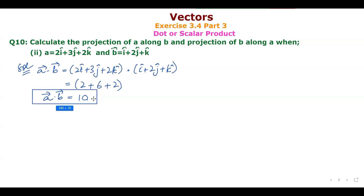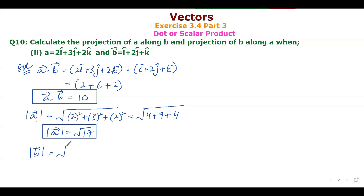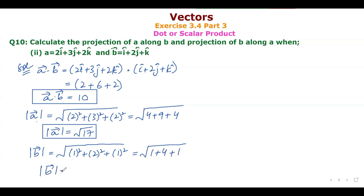Finding |A|: √(2² + 3² + 2²) = √(4 + 9 + 4) = √17. Finding |B|: B = i + 2j + k, so |B| = √(1² + 2² + 1²) = √(1 + 4 + 1) = √6.